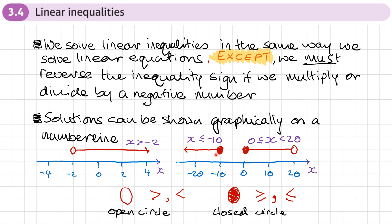A couple more examples: this diagram shows x is less than or equal to negative 10, pointing to the left. And here we have an inequality between two values — x lies between zero and 20, with an open circle at 20 (less than) and a closed circle at zero (greater than or equal to). If your line runs between two values, write one inequality; if there are two separate lines with a gap, write them as separate inequalities.